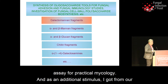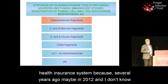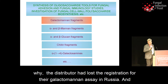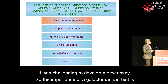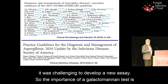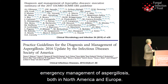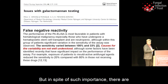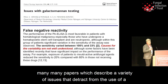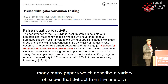Galactomannan represents a special interest because of the importance of the galactomannan assay for practical mycology. Additional stimulus came from our healthcare system, because several years ago — maybe in 2012 — Bayer lost registration for their galactomannan assay in Russia, and it was challenging to develop a new assay. The importance of the galactomannan test is very well known. It is included in all regulations and recommendations for diagnosis and management of aspergillosis, both in North America and Europe.